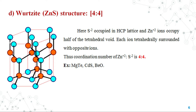Each Zn2+ is surrounded by 4 sulfide ions, and each sulfide ion is surrounded by 4 Zn2+ ions, giving coordination numbers of 4:4. This particular structure can be seen in magnesium telluride, cadmium sulfide, and beryllium oxide crystals.